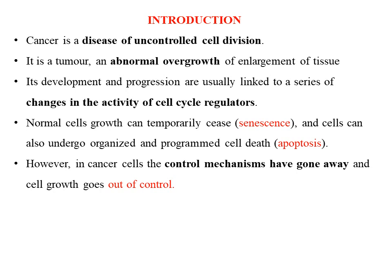Normal cells can also undergo organized and programmed cell death, a process known as apoptosis. But unlike normal cells, cancer cells ignore the signals which stop cell division. The control mechanisms have gone awry, which leads them to grow in an out-of-control fashion. They divide repeatedly and grow out of control, causing the cells to become enlarged and appear as a tumor.